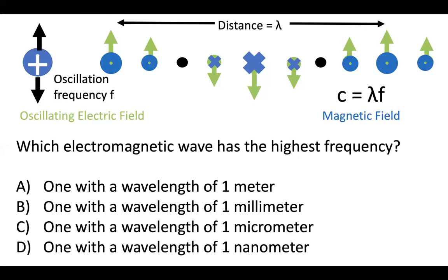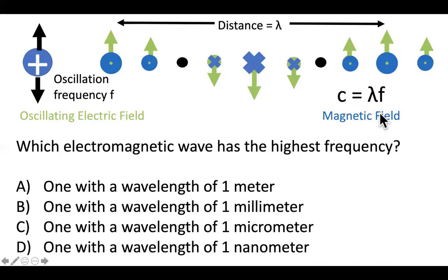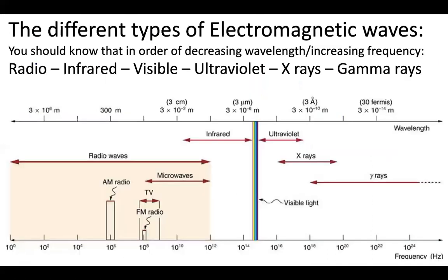It can sometimes be a little counterintuitive because naturally people want to say if something is more in one property, it's more in another — but that's not the case. Things with higher frequencies tend to have smaller wavelengths, and this is the basis of why all plots of the electromagnetic spectrum usually show both of these properties.